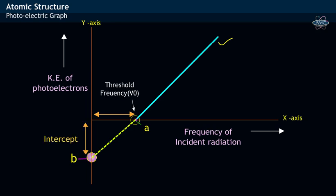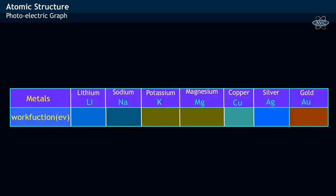Here, the intercept on Y axis refers to the work function of the metal W0. Different metals have different work functions and the same may be seen in the table shown.